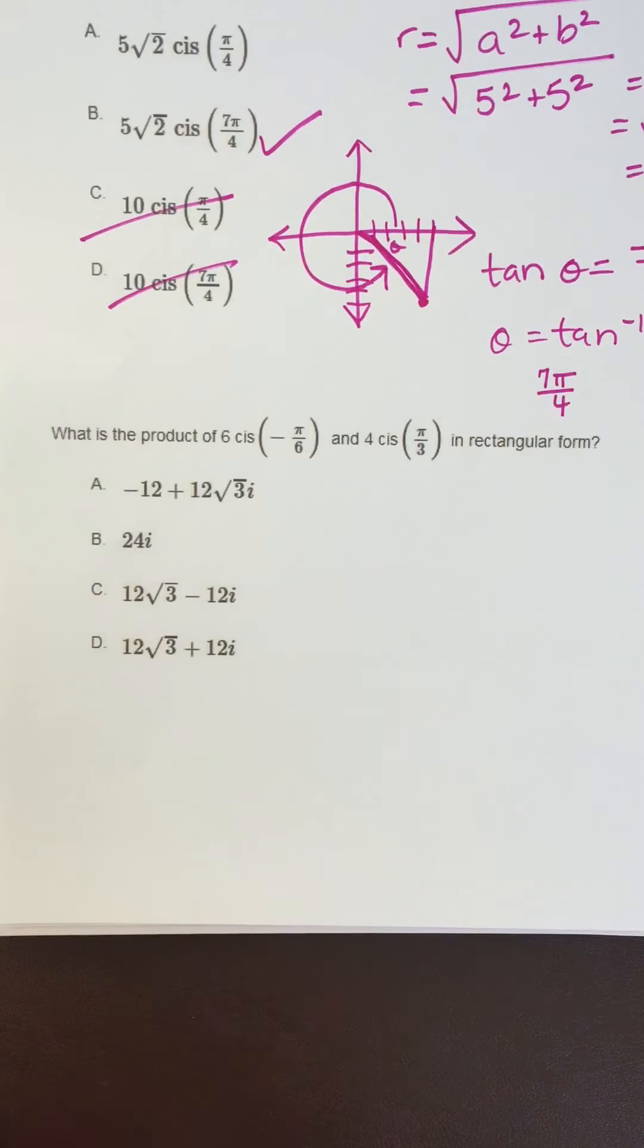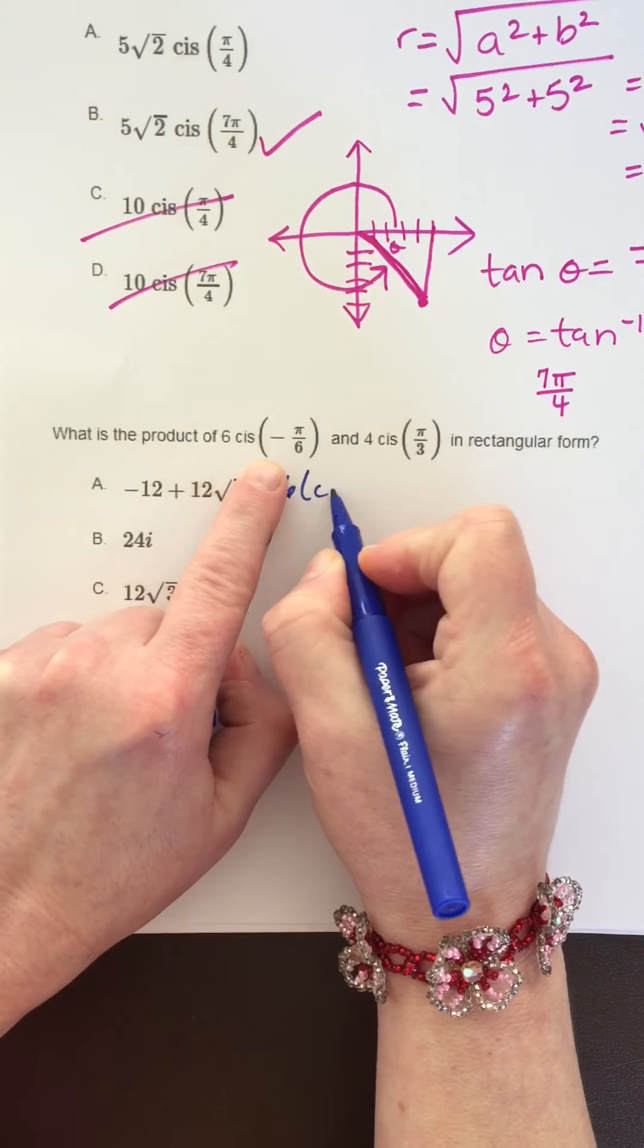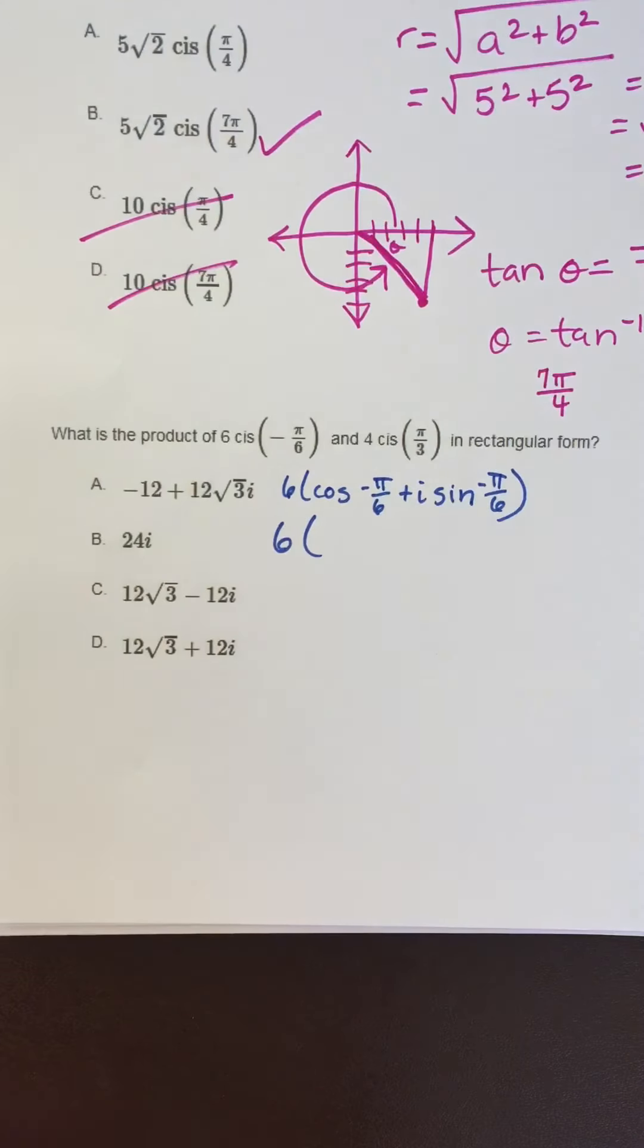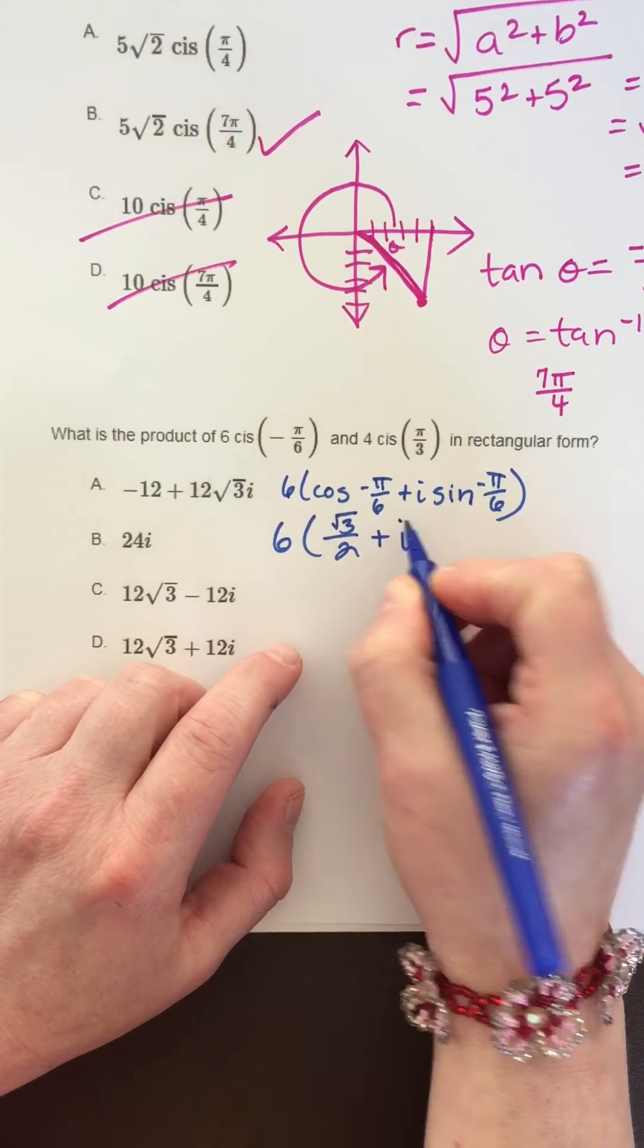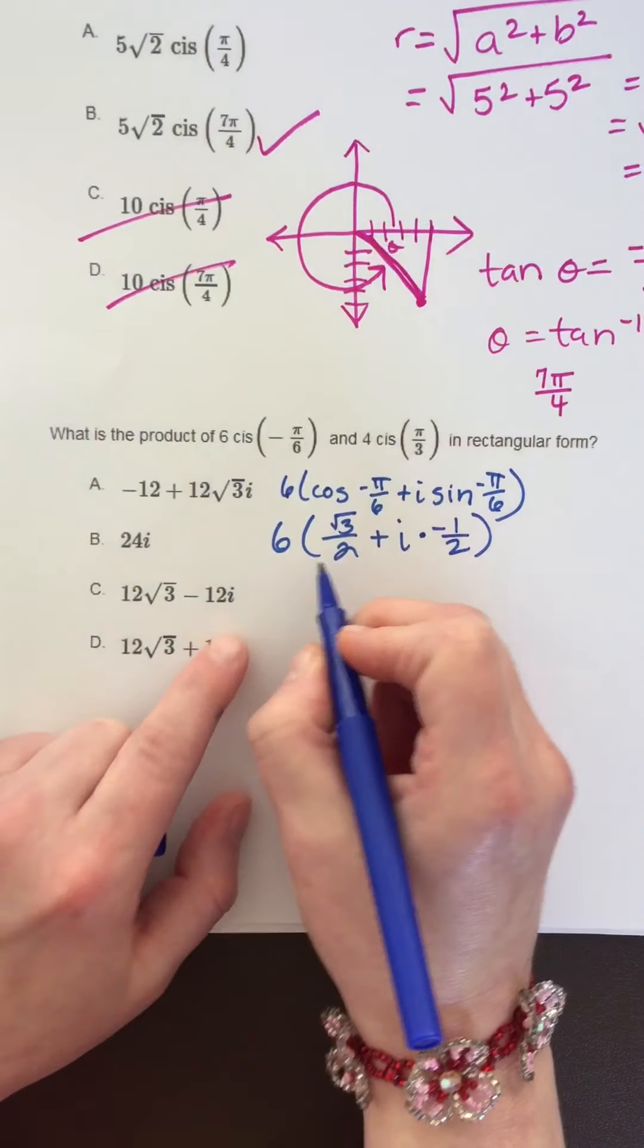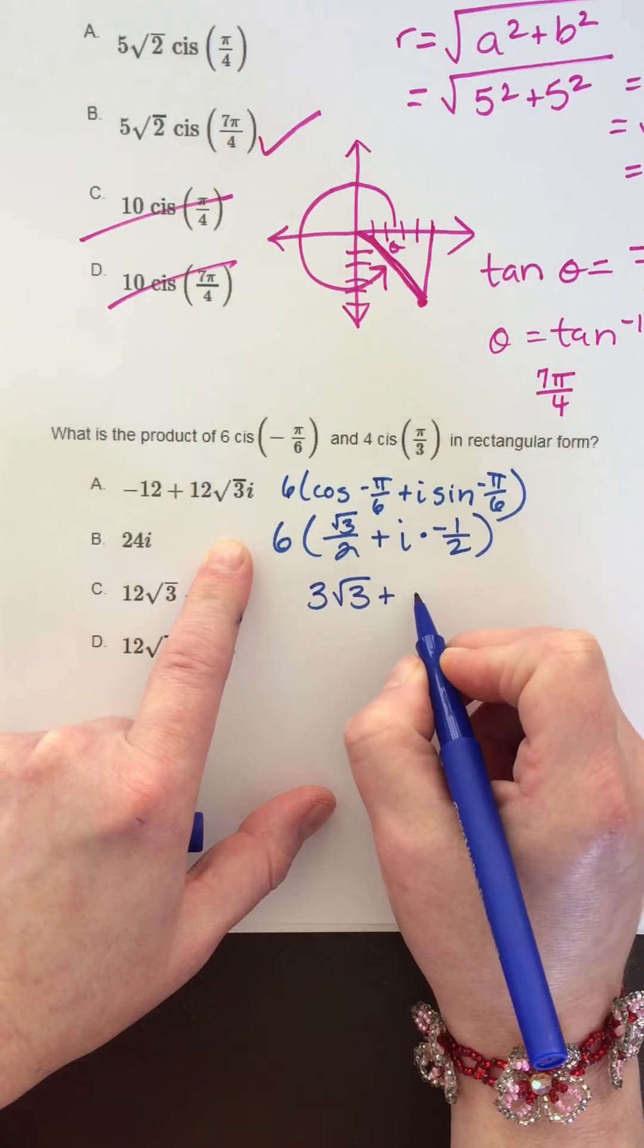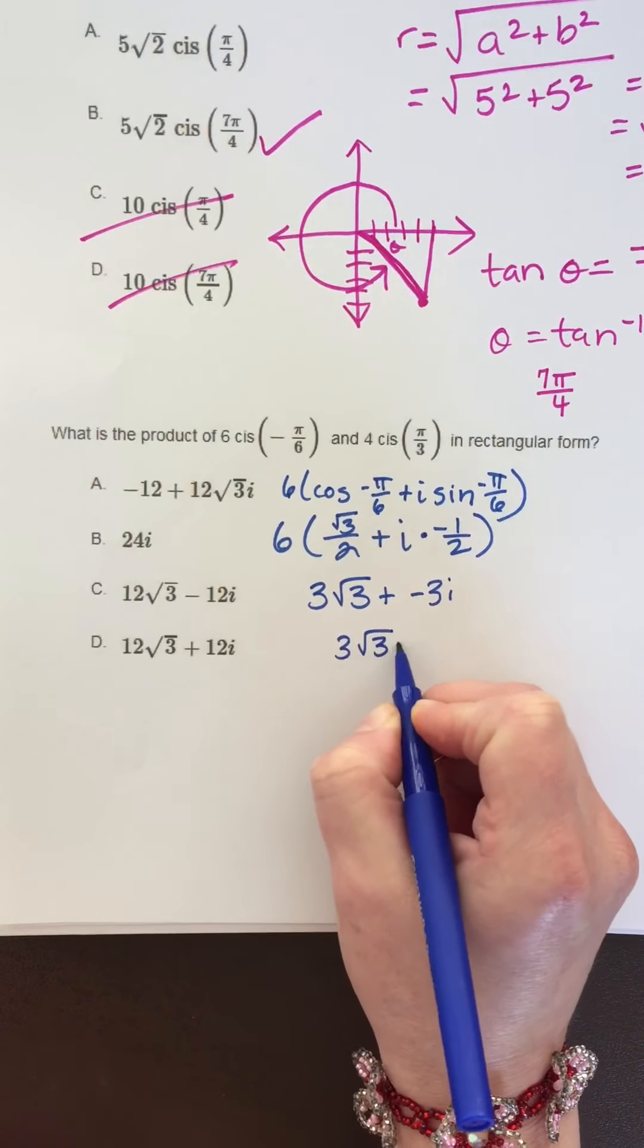And the last one. This is 6 times cosine of negative pi over 6 plus i times sine of negative pi over 6. Plug in those unit circle values. The cosine of negative pi over 6 is square root of 3 over 2, and sine of negative pi over 6 is negative 1 half. Distribute the 6. Two goes into 6 three times, so that's 3 square root of 3, and that would be negative 3i. That's 3 square root of 3 minus 3i.